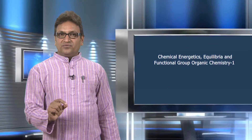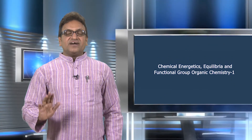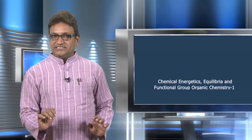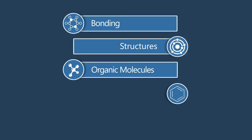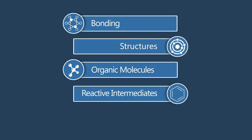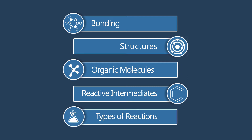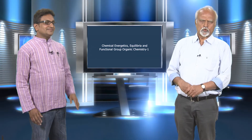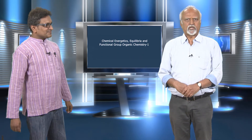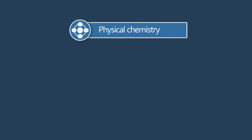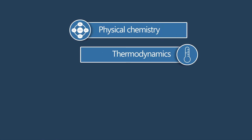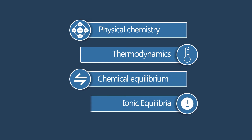By now, you are familiar with fundamental aspects of chemistry, such as bonding, structures, organic molecules, reactive intermediates, types of reactions, etc. In this semester 2 of the online B.Sc. program, you will become more familiar with the basic understanding of physical chemistry topics: thermodynamics, chemical equilibrium and ionic equilibrium.